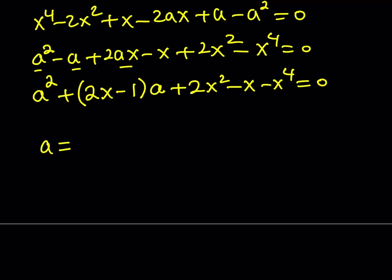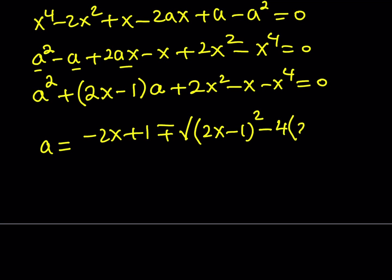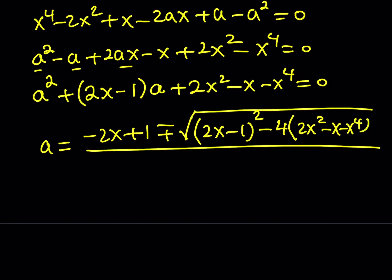Using the quadratic formula: a equals negative b — which is the opposite of (2x minus 1), so (negative 2x plus 1) — plus or minus the square root of b squared, which is (2x minus 1) squared, minus 4ac, where a is 1 and c is (2x squared minus x minus x to the fourth), all divided by 2.